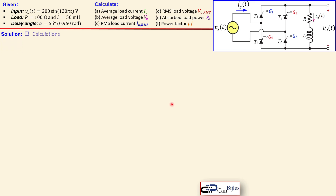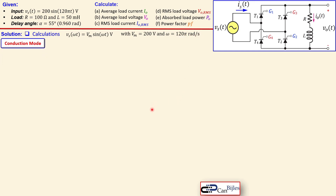Let's go to the solutions. We first express the source voltage in the ωt domain instead of the time domain. Here Vm is 200 volts and ω is 120π radians per second. The conduction mode depends on the operating frequency, the load values (resistor and inductor), and the delay angle chosen to activate the thyristors.